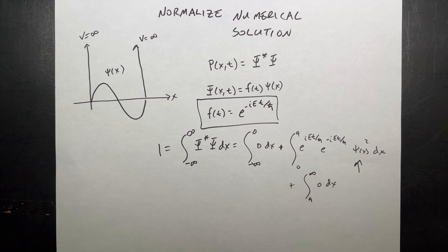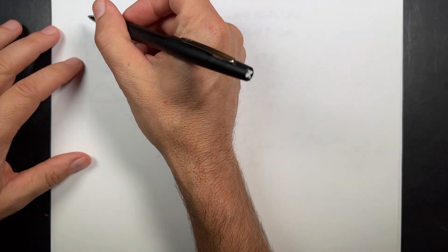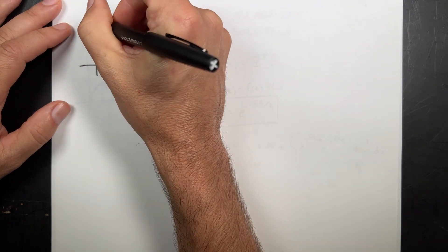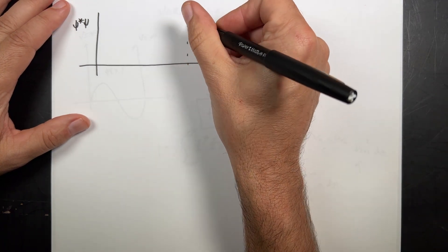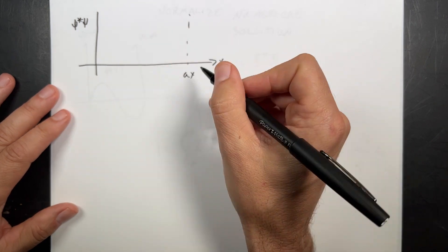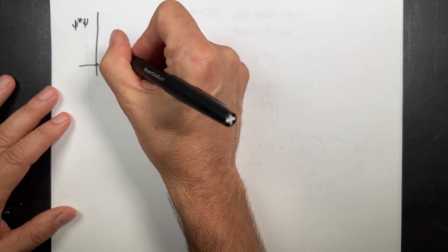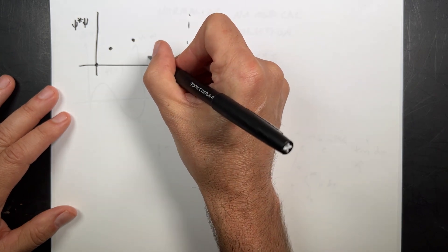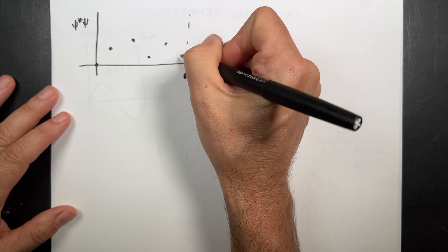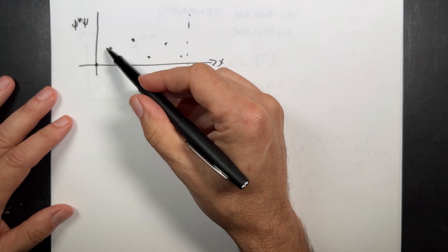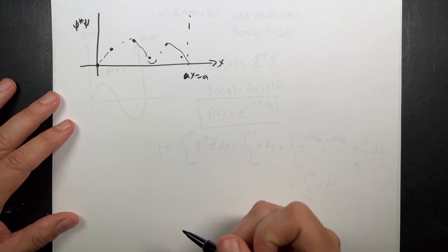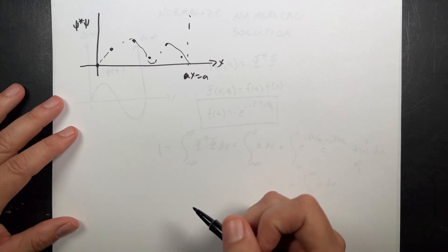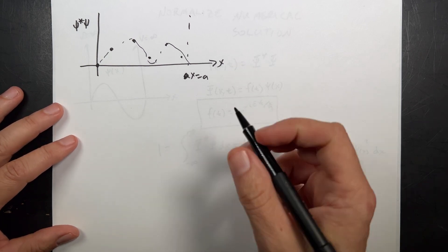How do we integrate data points? I'm going to have to square them, which I can do — you can square data points, that's not a problem. Imagine I have psi-star psi plotted against x from zero to a, with data points at various locations forming a curve. The integral is just going to be the sum of the areas. I'll call it 'a', which is the sum over i of psi_i squared times delta x.